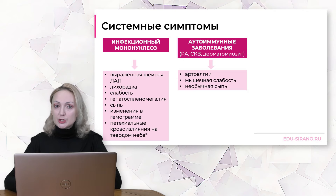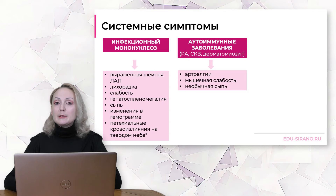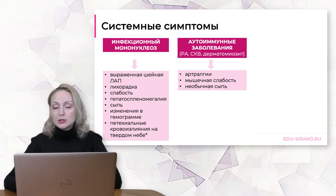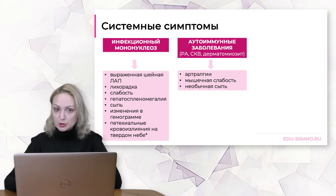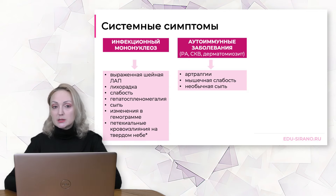Если кроме увеличенных лимфатических узлов пациент жалуется на непонятные артралгии, миалгии, мышечную слабость или необычную сыпь – у этого пациента могут быть аутоиммунное или аутовоспалительное заболевание. В моей практике были пациенты с дерматомиозитом, которые изначально обращались к детскому онкологу с жалобами на увеличение лимфатических узлов. Неоднократно приходили пациенты с ревматоидным артритом и даже пациент с болезнью Крона. Таким образом, лимфаденопатия может быть симптомом самых разных заболеваний.